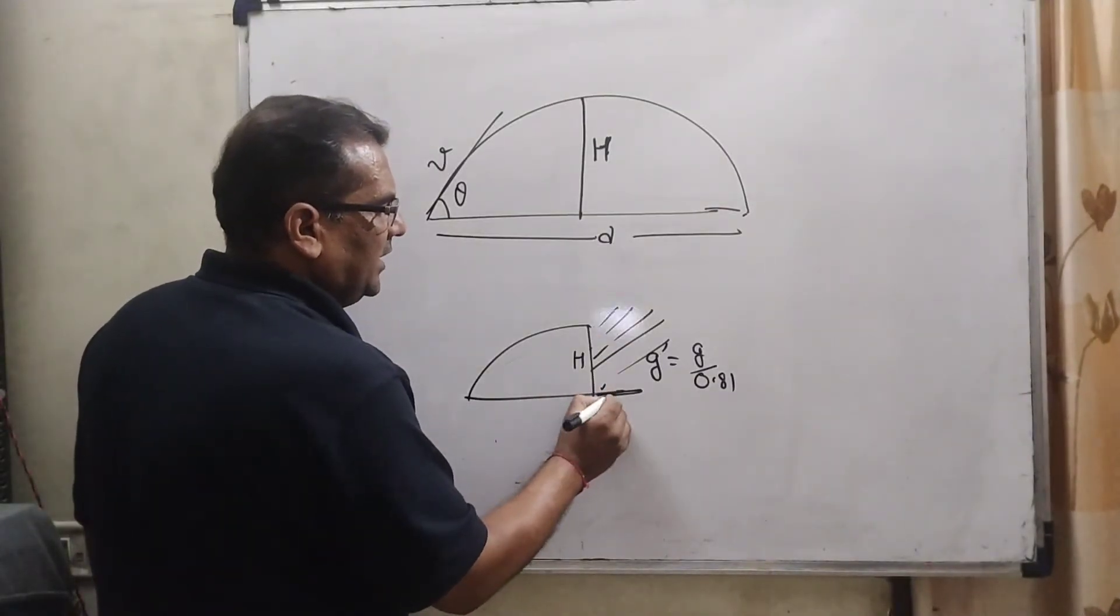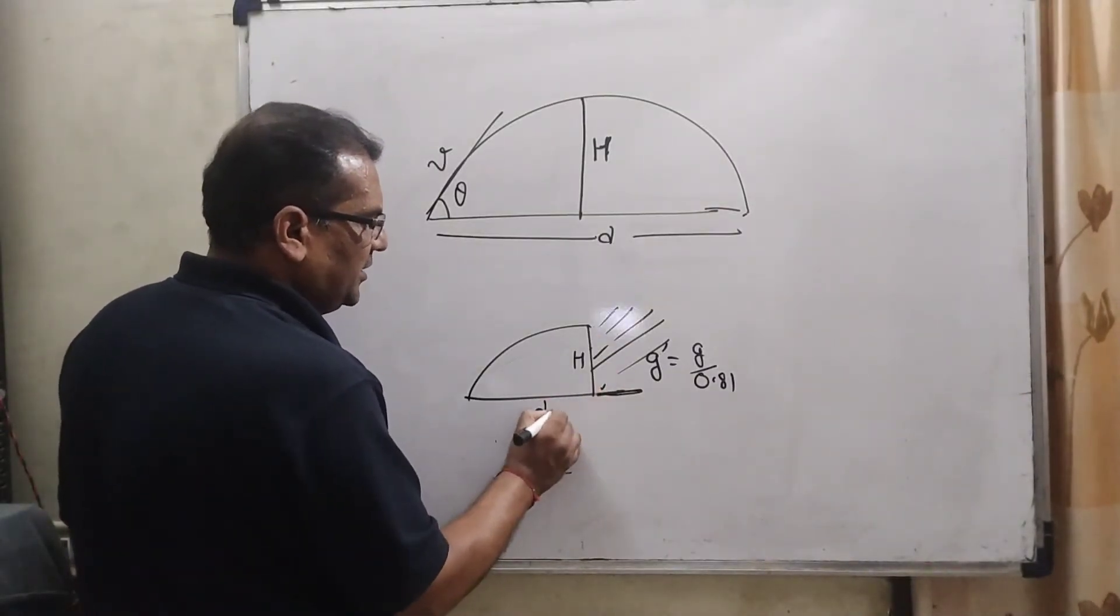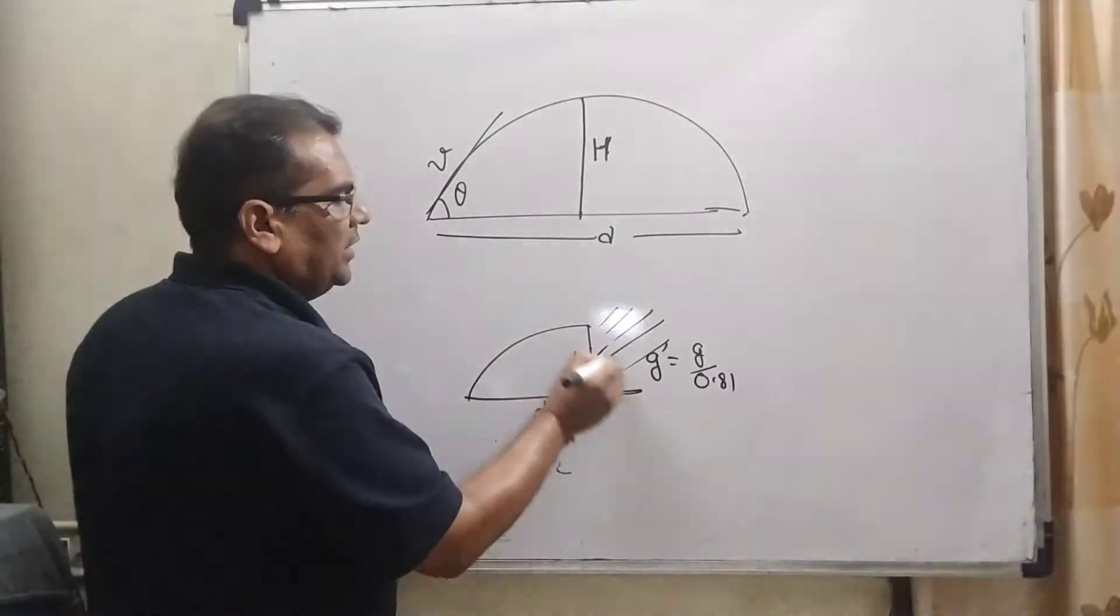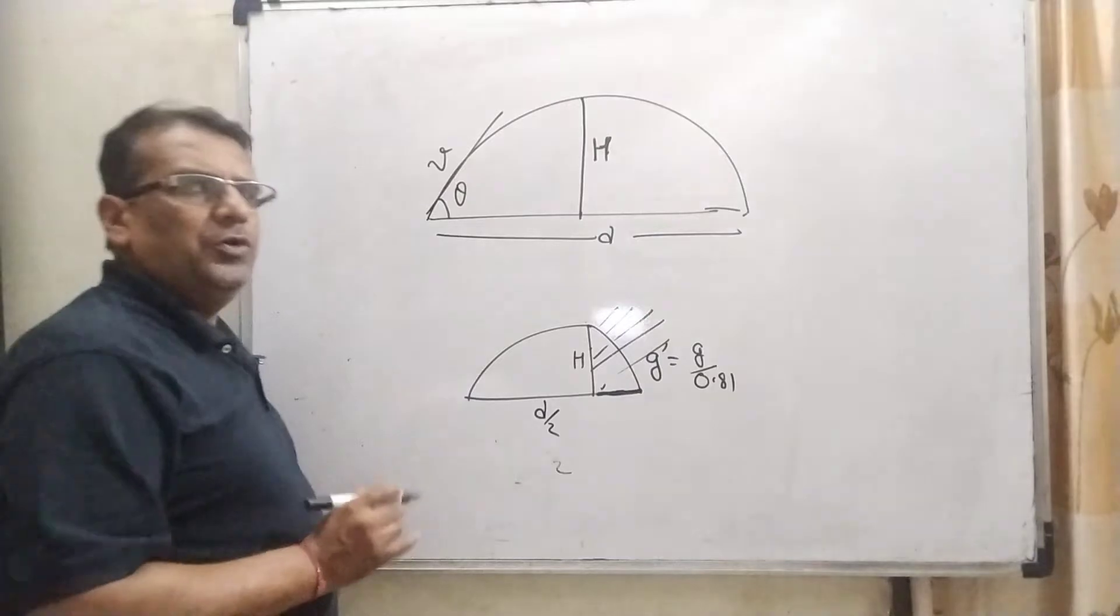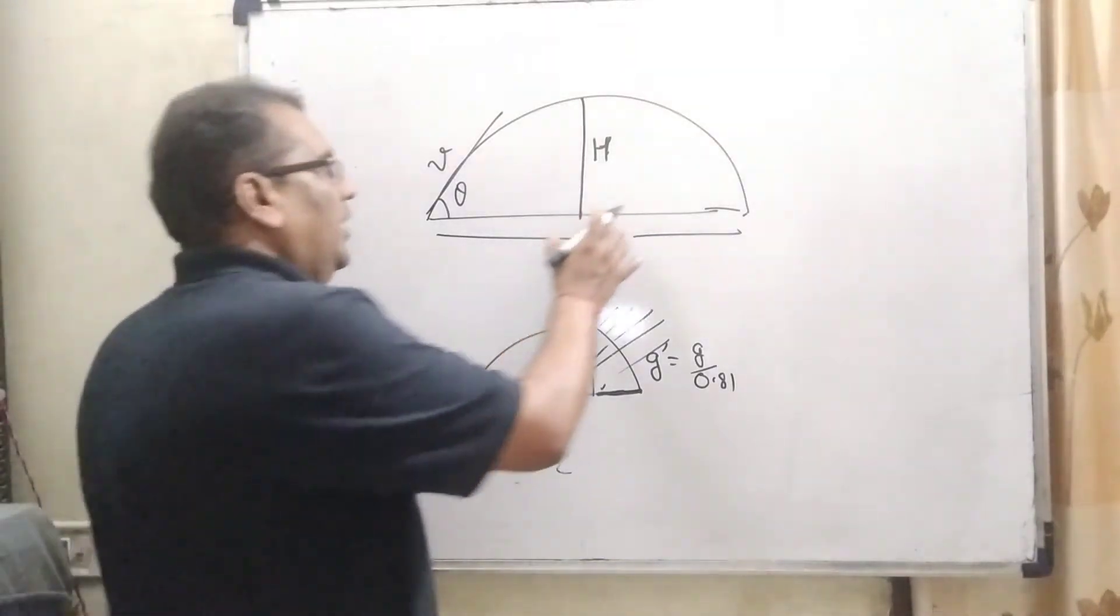At the moment, this distance, we can say this range, half range is D by 2 as usual. But this half range is changed because here acceleration due to gravity is changed.